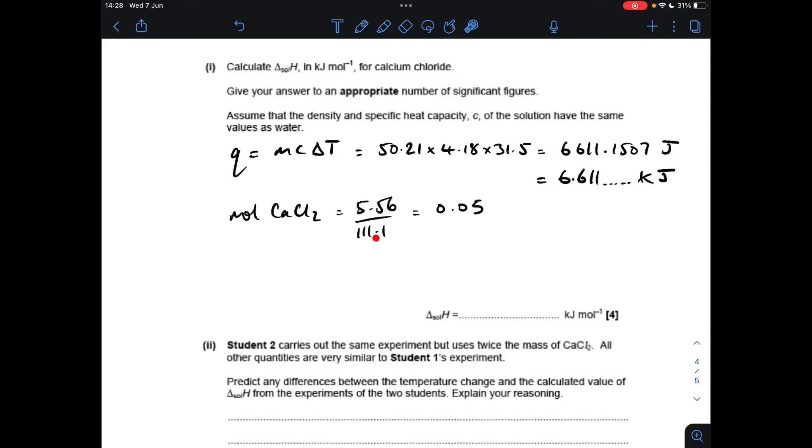Next thing we do is work out the moles of calcium chloride, so just mass over Mr, 0.05. The ΔH is the kilojoules per mole, so kilojoules divided by moles, so 132.08. It's an exothermic reaction. I always put the sign in at the end, it's just the way I do it. So it's exothermic, the solution got hotter, so we need a negative sign.